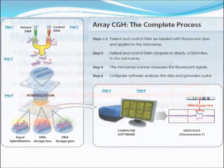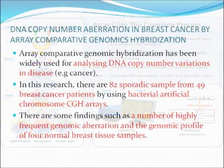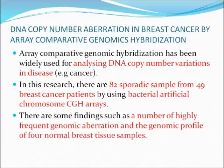The steps to conduct comparative genomic hybridization analysis are: firstly, the patient and control DNA are labelled with fluorescent dyes and applied to the microarray. Then, the patient and control DNA compete to hybridize to the microarray. Next, the microarray scanner measures the fluorescence signals. Finally, computer software analyzes the data and generates a plot. Based on published work, array CGH has been widely used for analyzing copy number variation in diseases like cancer.